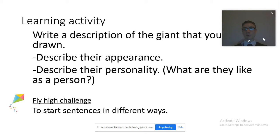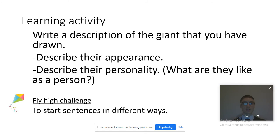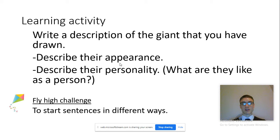Now that you've drawn your picture of the giant, you need to write a description of the giant that you've drawn. You might want to describe their appearance and describe their personality — what they are like as a person. The fly high challenge is to start sentences in different ways. You might also want to include commas, and of course you're going to be including adjectives.